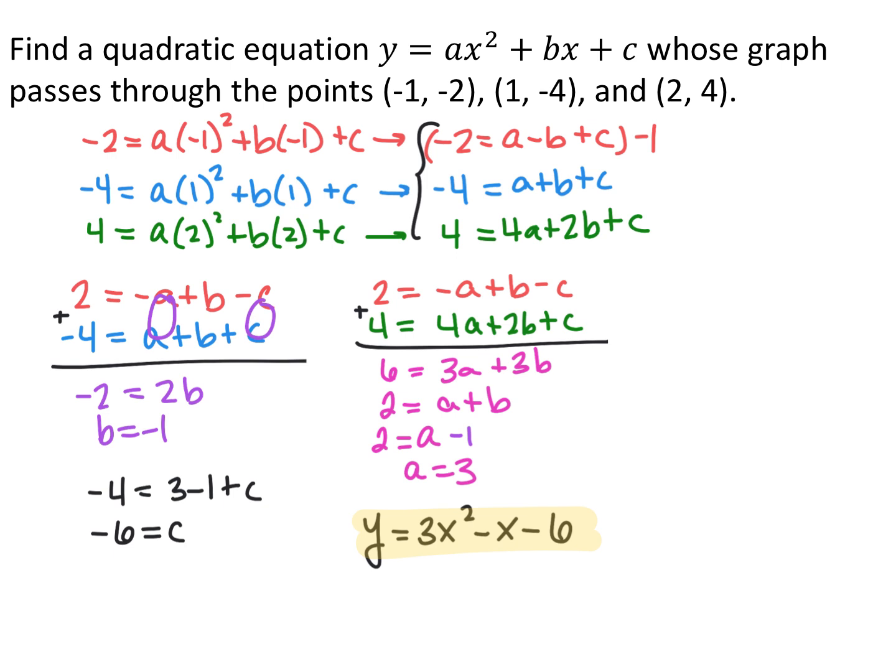We have substitution and elimination methods to solve systems of linear equations. When we want to solve a system of three linear equations, we eliminate the same variable from two different pairs of equations, which gives us a system of two equations to solve, and then solve for the third variable.